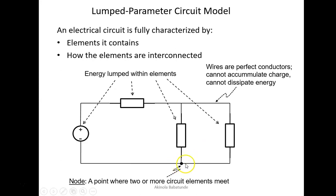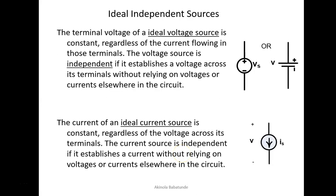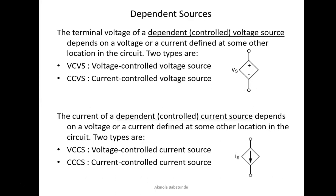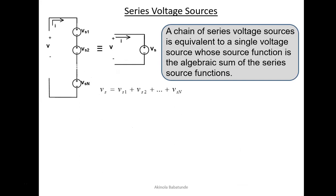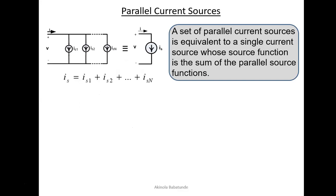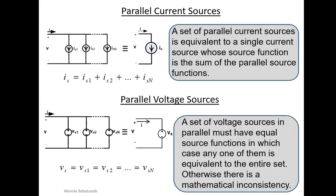This point is usually referred to as the node. It is a point where two or more circuit elements meet or are connected. We have talked about ideal and independent sources, which is very important for the other lessons that are coming up. We've talked about dependent sources that are linearly controlled. We've talked about series voltage sources, series current sources, parallel current sources, and parallel voltage sources.